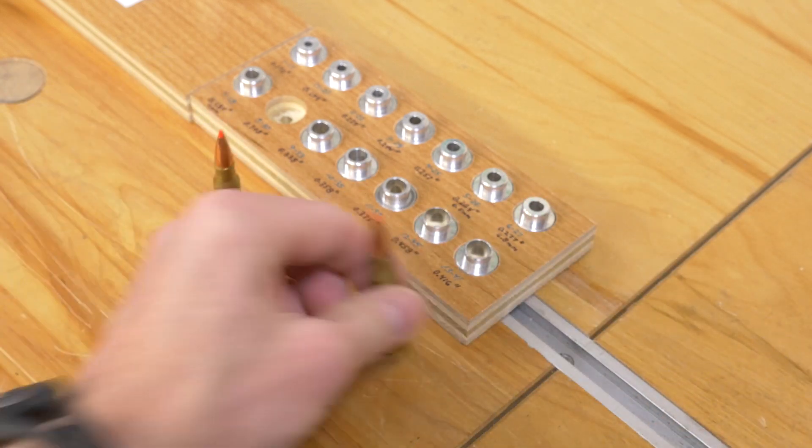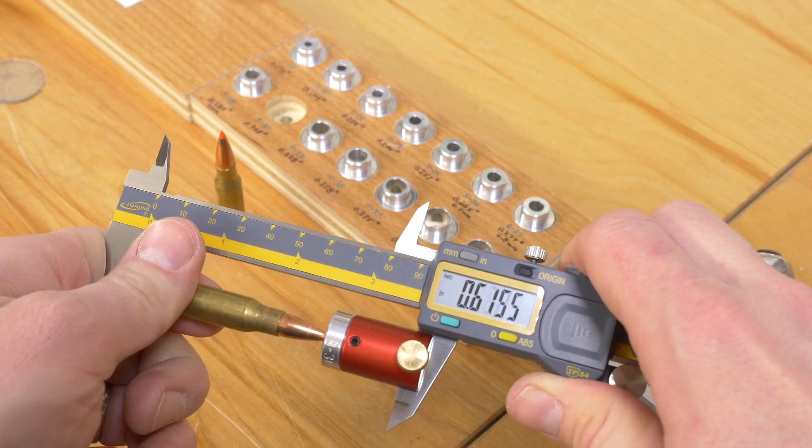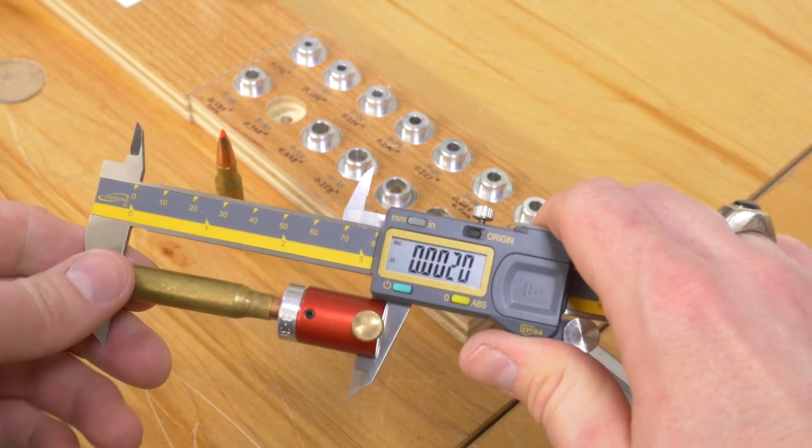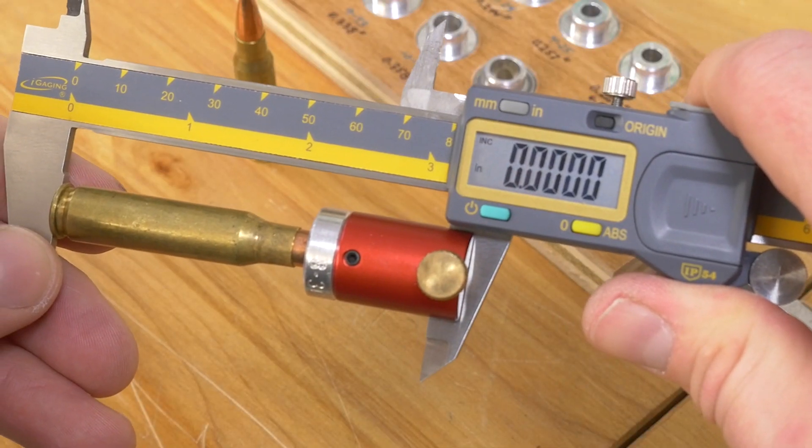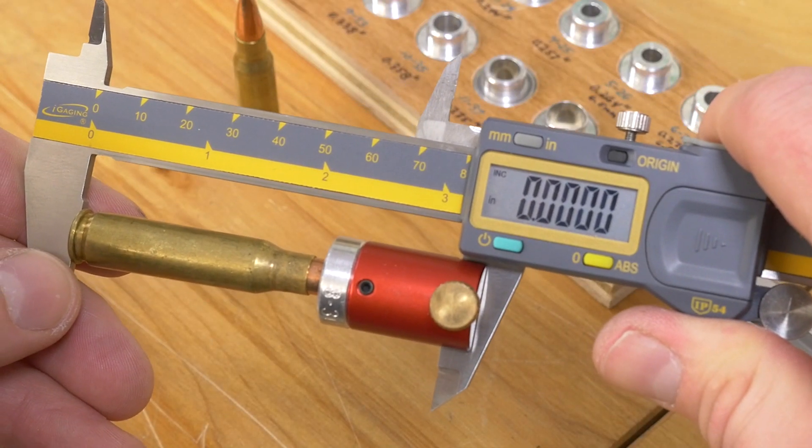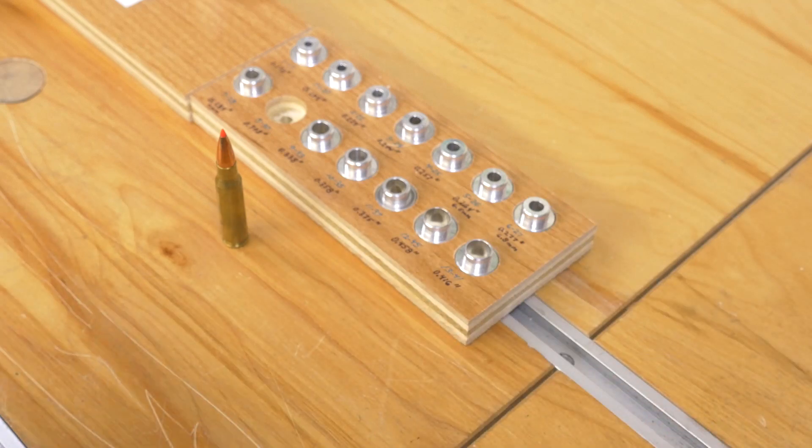Okay, then we're going to compare that against another cartridge that was loaded again at the same time with the same setup, and look at that, we're at zero. So that is a Redding competition seating die in action.